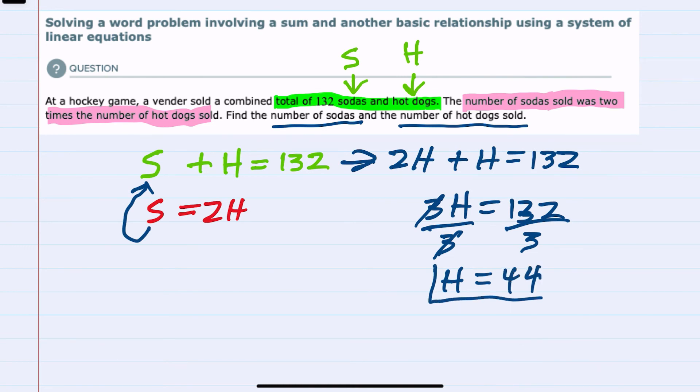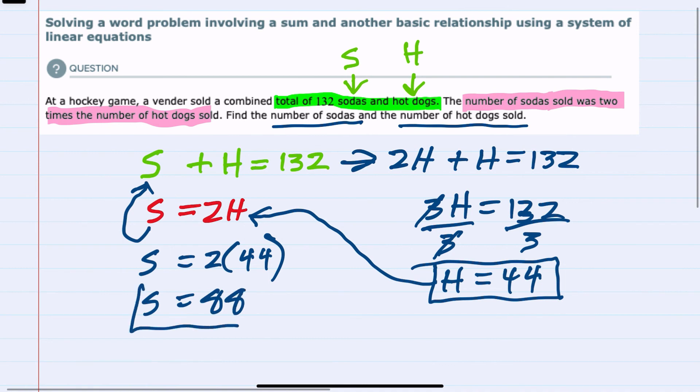And now that we have the number of hot dogs, I can substitute into either of the original equations to find the number of sodas. Using the second expression here, I have S equals 2 times H, but I know H now is 44. So that means S equals 88. We have the number of sodas and the number of hot dogs now.